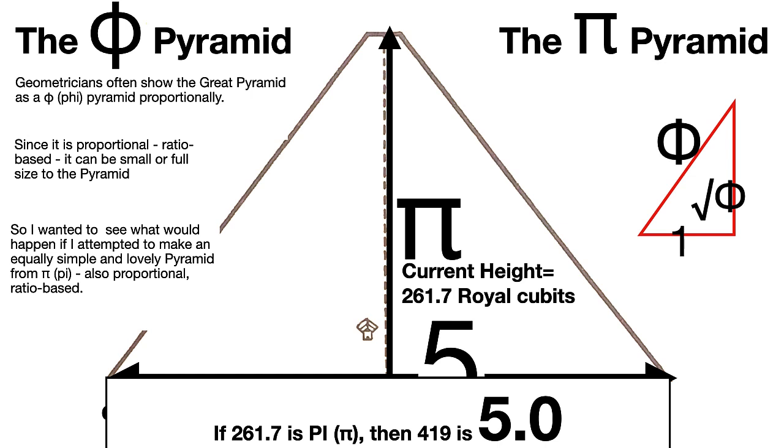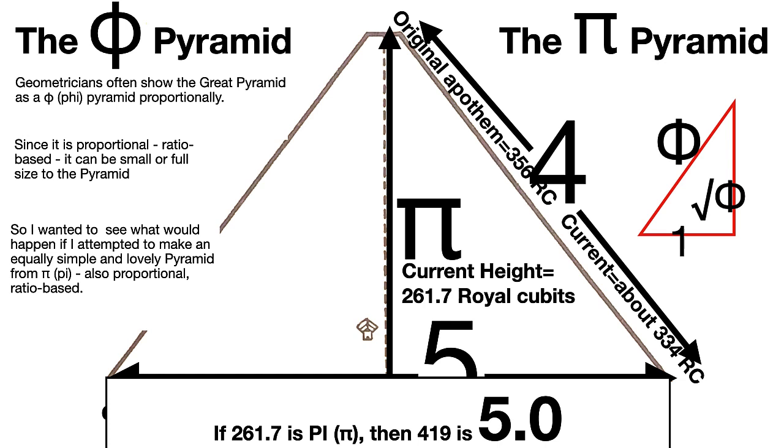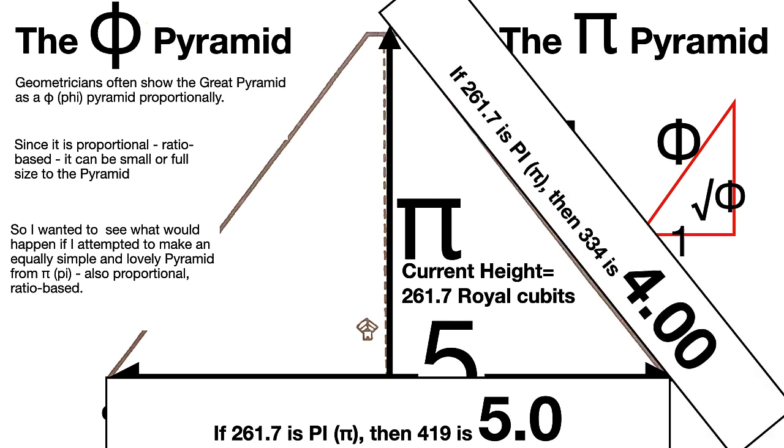If you use the same ratio as calling Pi 261.7, which is the height, then the base is 5.0. I'm just showing one decimal because numbers appear after that 0, but at least for the first decimal place, it is 5.0. So the base is 5. We've got a height of Pi and a base of 5 based on what's actually there now. Let's look at the apothem. The original apothem from the end of the casing stones up to the point at the top was 356 royal cubits, but the current is about 334 royal cubits. If we do that same proportionality, it comes out to 4.00. We have two decimal places that it's a zero. So wow, there's a Pi 4.5 pyramid here. I found what I was searching for. I'm excited. This is totally cool.